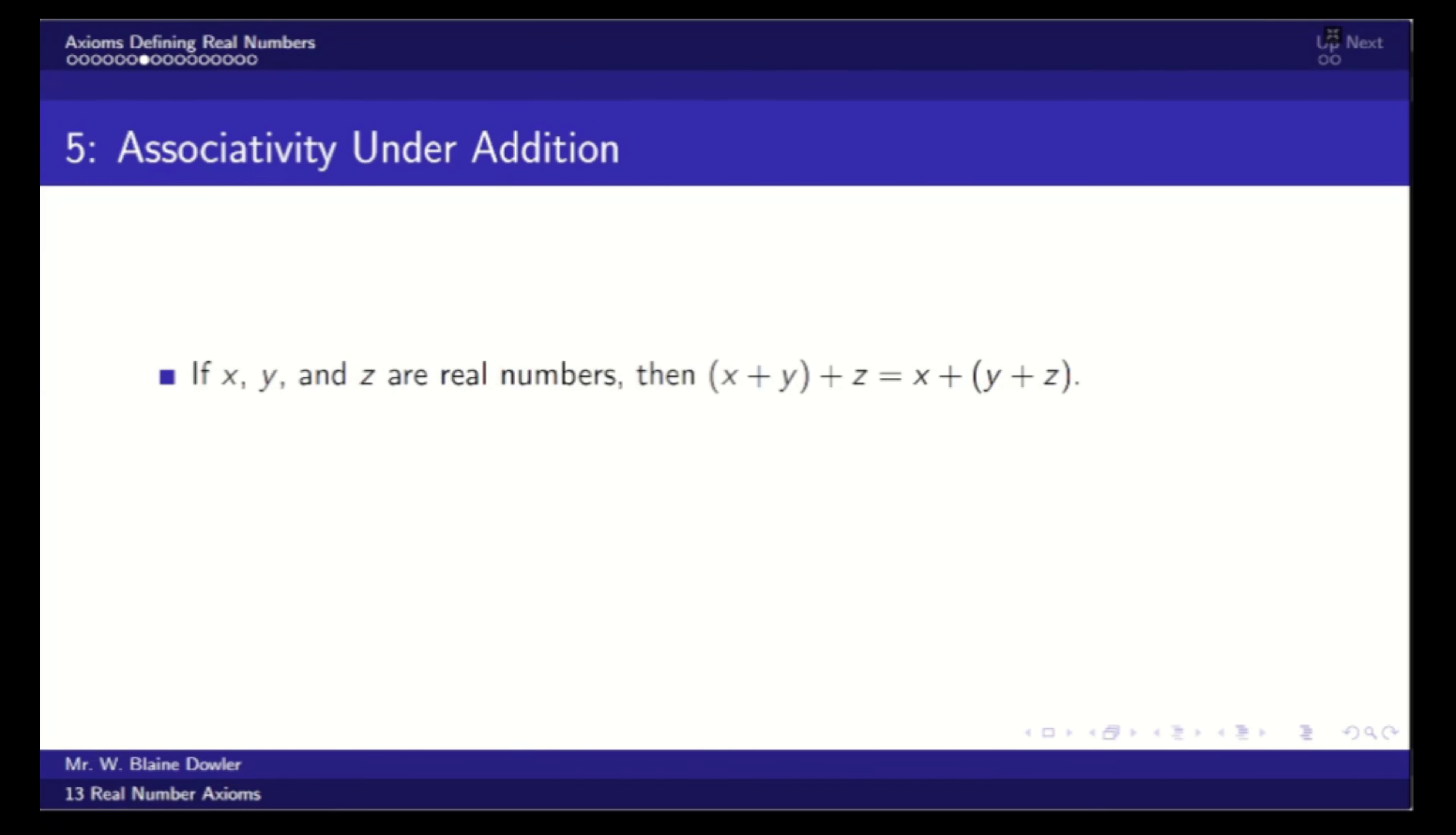Axiom five, associativity under addition. So if x, y, and z are real numbers, then we can add either pair first. So x plus y plus z has to be equal to x plus y plus z. So if our numbers are two, three, and four, five plus four is nine, just like two plus seven is nine.